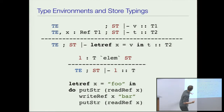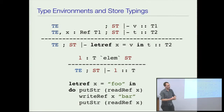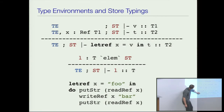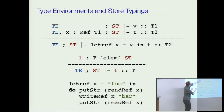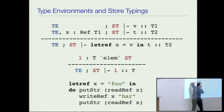When I write the program, I'm only talking about abstract binders. Locations only start to exist when the program runs. So if I want to take my program and type check it, because my program only contains variables, I could use typing rules which don't have a store typing at all, because the source program is never going to have locations. Therefore I don't need a store typing, because store typings only hold the types of locations.